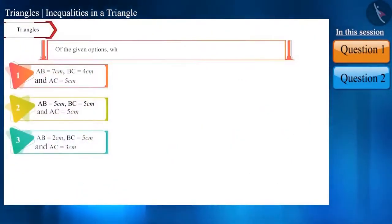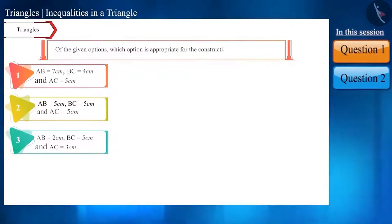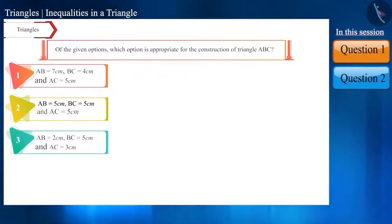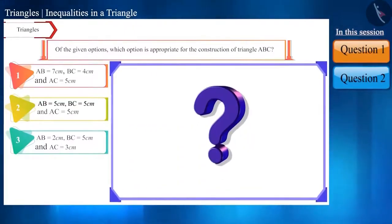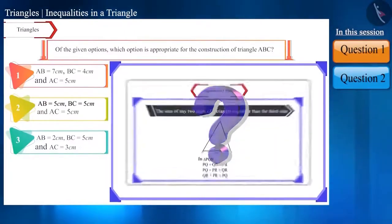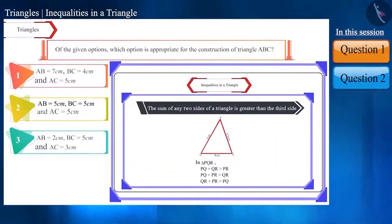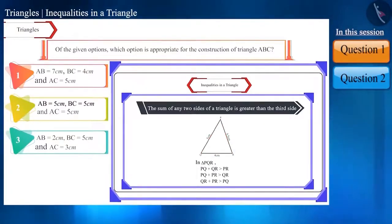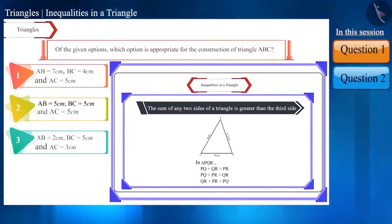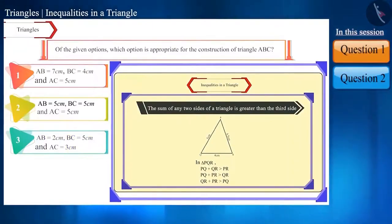Of the given options, which option is appropriate for the construction of triangle ABC? To solve this type of question, we know that for the construction of a triangle, the sum of any two sides must be greater than the third side. So we have to check whether the given options agree with this rule or not.